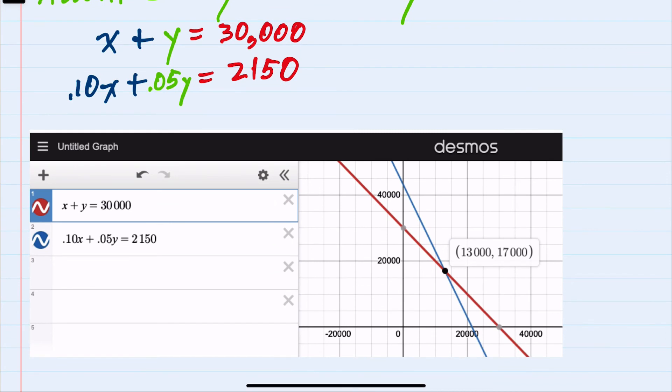And we can see that these two linear equations intersect at $13,000 for the X value and $17,000 for the Y value.